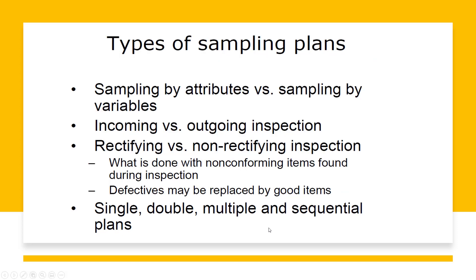Types of sampling classes include: sampling by attributes versus sampling by variables; incoming versus outgoing inspection; and rectifying versus non-rectifying inspection — what is done with non-conforming items found during inspection. Defectives may be replaced by good items; the producer can focus on material and processes to improve quality, reproduce, or re-engineer the product.